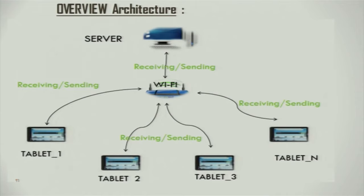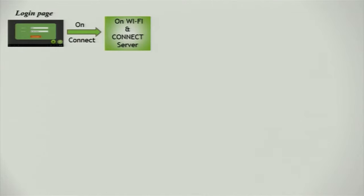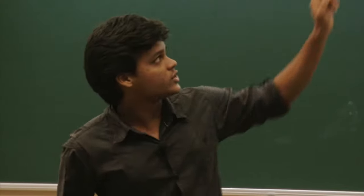This is the basic architecture we are using: a simple server and clients. The clients are tablets and the server is the instructor's machine. The intermediate connectivity between them is Wi-Fi. This is the flow of functionality — we will summarize how the app works in a rough manner.